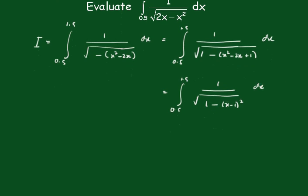And this is the inverse sine function, so that's going to be sine to the minus 1 of x minus 1 between 1.5 and 0.5. And that'll be the inverse sine of 1.5 minus 1 is 0.5 minus the inverse sine of minus 0.5.